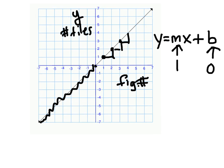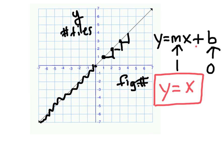Therefore, our formula for this graph would be y equals one x, and I can just write that as x, plus zero. I don't have to write the plus zero. So my equation for the line is y equals x.